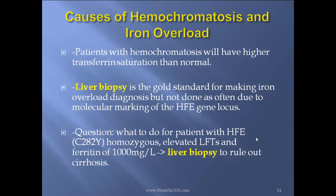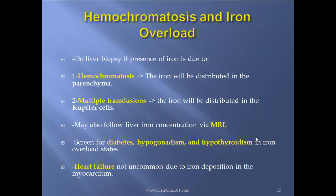Patients with hemochromatosis will have higher transferrin saturation than normal. Liver biopsy is the gold standard for making an iron overload diagnosis, but is not done as often due to molecular marking of the HFE gene locus. For boards: a patient with HFE C282Y homozygous gene, elevated LFTs, and ferritin of 1000 should have a liver biopsy to rule out liver cirrhosis. On biopsy, in hemochromatosis the iron will be distributed in the parenchyma, whereas with multiple transfusions the iron will be distributed in the Kupffer cells. You may also follow liver iron concentrations via MRI.